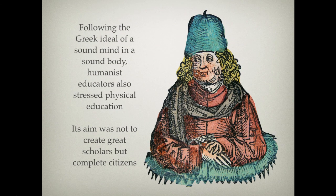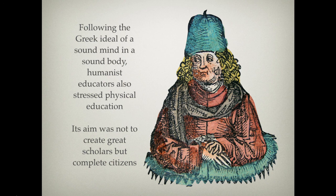Following the Greek ideal of the sound mind and body, humanist educators also stressed physical education — in the classical Greco-Roman mind, one needed to be both physically and mentally fit. The aim was not to create great scholars necessarily, but complete citizens — not the greatest lawyer to function for the monarch, but an educated citizen who would be informed and benefit society in general.